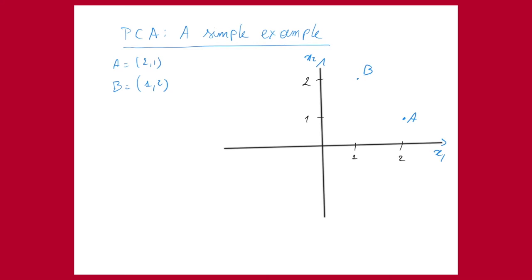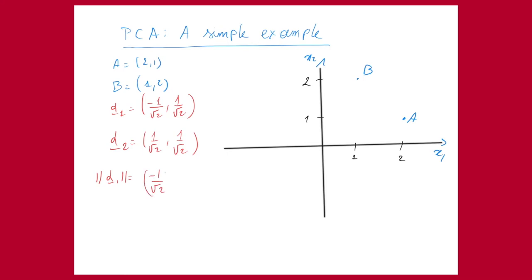I'm now going to add two other points in this plot. We have alpha1, which is equal to (-1/√2, 1/√2), and we have alpha2, which is (1/√2, 1/√2). I can check that the norm of alpha1 is equal to 1: the first component (-1/√2) squared plus the second (1/√2) squared gives 1/2 + 1/2, and the square root of 1 is equal to 1. In the same way you can prove that alpha2 has norm 1.